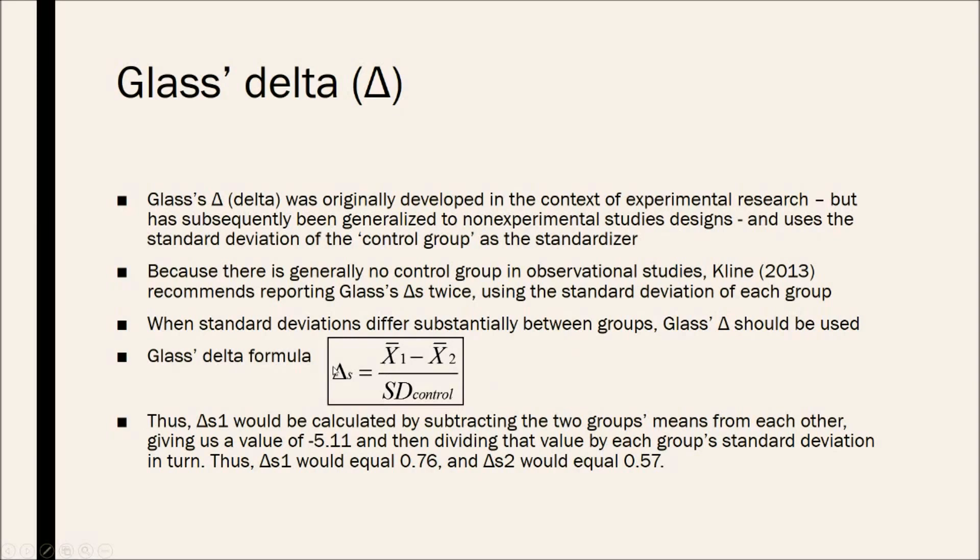And Glass's Delta formula is pretty simple, but you would do it twice for each group's standard deviation. So, Glass's Delta 1 would be the difference of the means divided by the first standard deviation, which we could denote as Delta 1, and then the difference between the means divided by the second group standard deviation, which we could denote as Delta 2. And you can see the difference here would be 0.76 as opposed to 0.57.